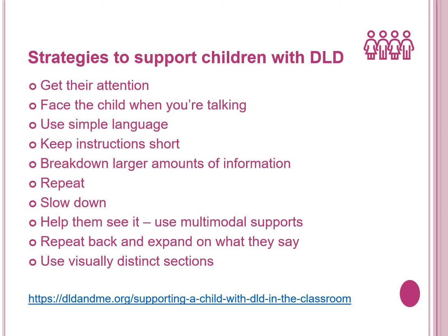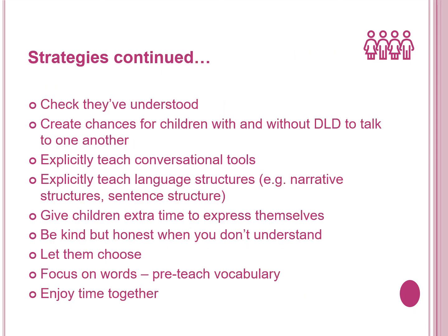Use visual support — for example, gestures, facial expression, pictures and symbols to help them understand what you say. Repeat back what they say using correct grammar. Use visually distinct sections when completing work or activities — for example, organising the page so that separate instructions, steps, themes or activities are clearly set apart from each other, as this can help the child with DLD manage the task in smaller steps. Ask them to repeat what you have said; if needed, say it again and show them.